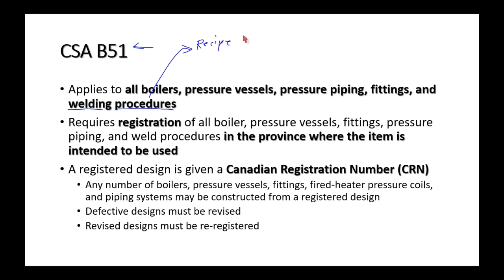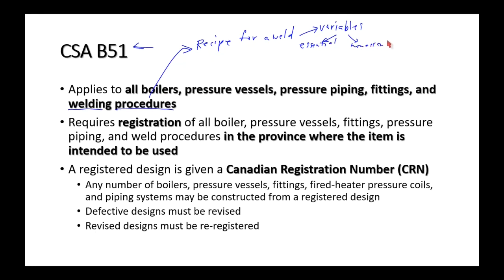A weld procedure is basically a recipe for baking a cake — except the cake is a weld. It has a whole bunch of variables that can be very important (essential variables) or less important (non-essential variables). Think of essential variables for baking a cake: how much flour, water, baking soda — all essential. Non-essential would be food coloring or icing.